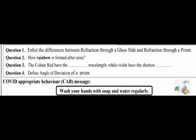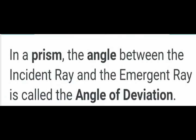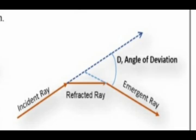Question 3 (Fill in the blanks): The color red has the longest wavelength, while violet has the shortest wavelength. Question 4: Define the angle of deviation of a prism. In a prism, the angle between the incident ray and the emergent ray is called the angle of deviation, as shown in the diagram.